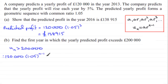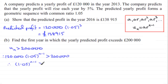Dividing both sides by 120,000, we get 1.05^(n−1) is greater than five thirds (200,000 ÷ 120,000 = 5/3). Be careful with inequalities — if you ever divide by a negative number, remember to switch the inequality sign. I'll be mentioning that again because there are several traps one can fall into.